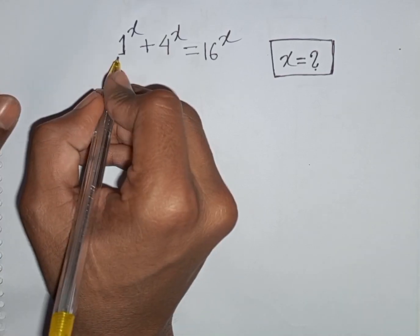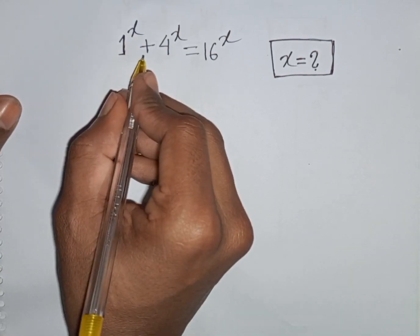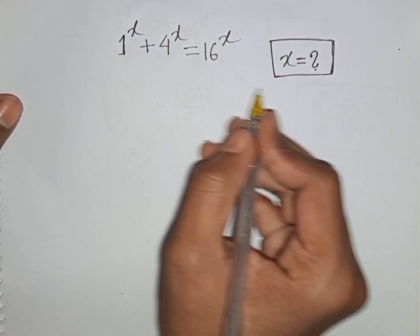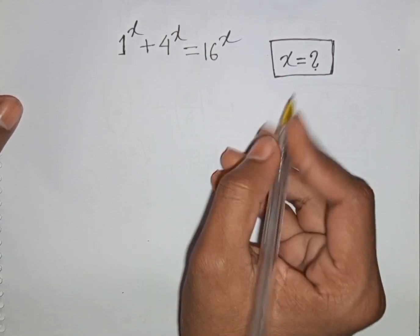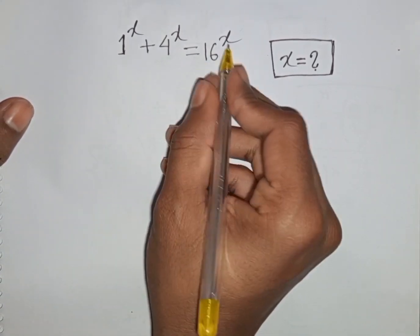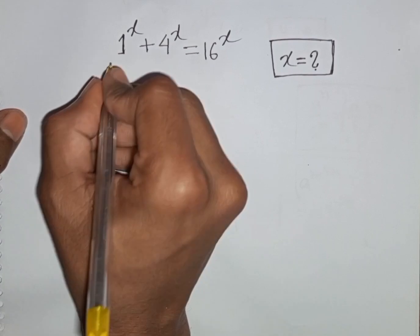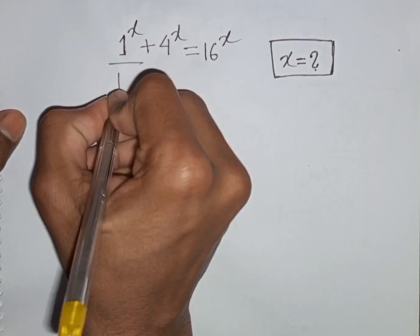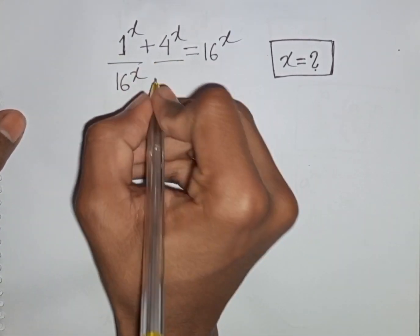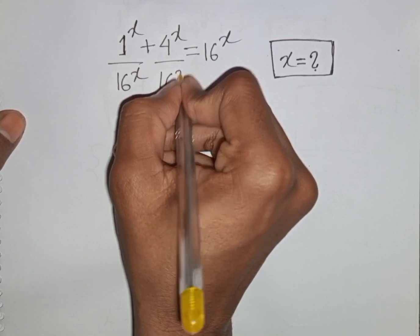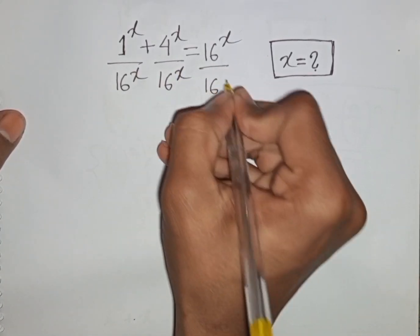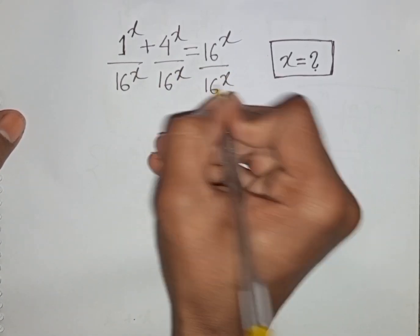How to solve 1^x + 4^x = 16^x. Find the value of x. First, we divide both sides by 16^x — dividing by 16^x on both sides.